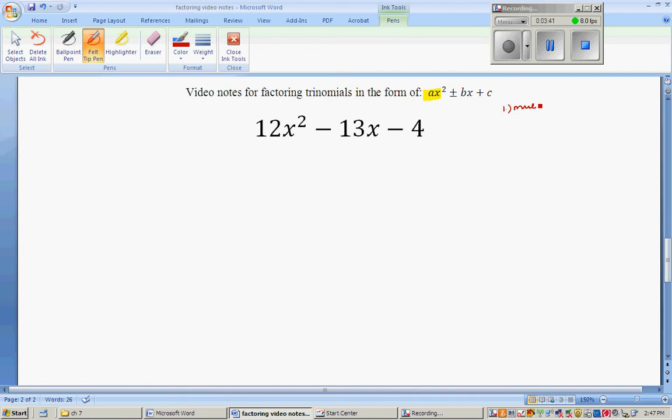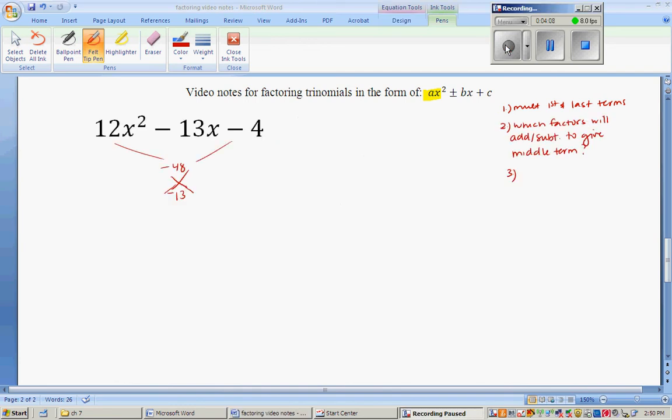You're going to multiply the first and last terms. So I'm going to say, what is 12 times negative 4? And it is negative 48. Then I'm going to ask myself, what two factors of 48 will subtract to give me 13? This is when knowing your divisibility rules really comes in handy. Take a moment and try and figure out what that is. All right. So which factors of 48 will subtract to give us 13? It's going to be 16 and 3. And it's going to be a negative 16.